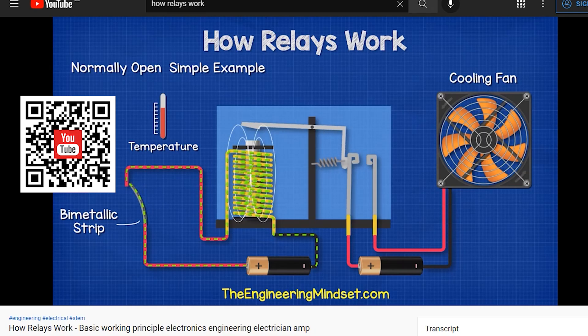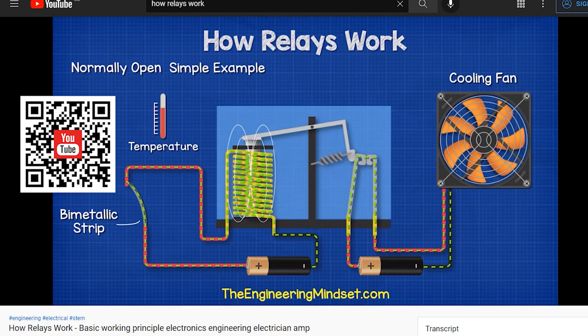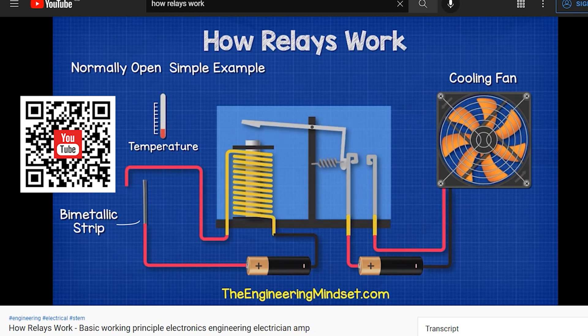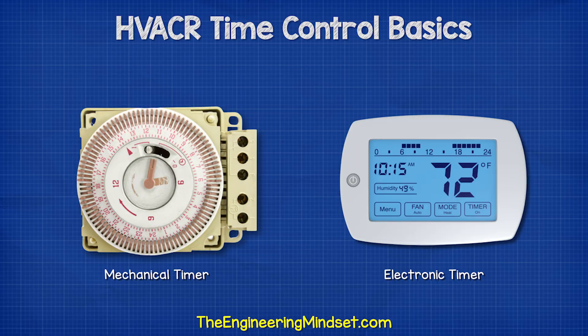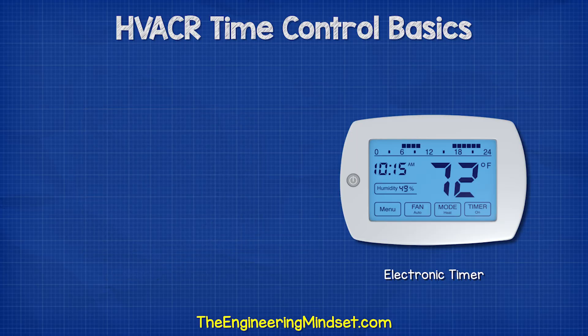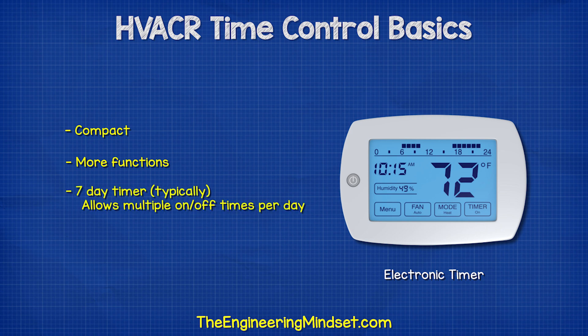By the way, we have covered how relays work in detail previously — I'll leave a link in the video description below. Electronic controllers are compact and much easier to use. They have far more functions, but usually at least a seven-day time schedule with multiple on-off times per day.